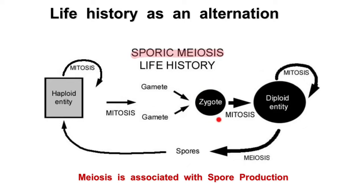Let's start with a zygote. A zygote is when two gametes fuse and we get a zygote, which is always diploid. So we start with a diploid zygote, and by the process of mitosis, the zygote would develop into a diploid entity. This part we can compare with humans — male and female gametes fuse making a zygote, which through mitosis develops into the fetus and then into the adult organism.